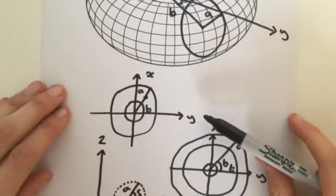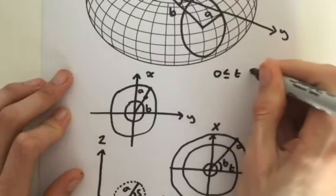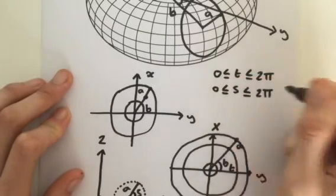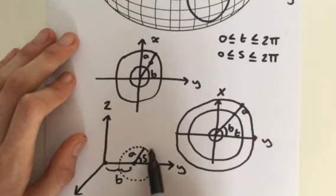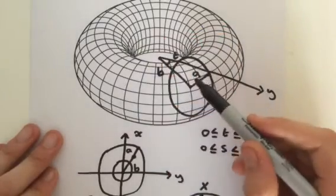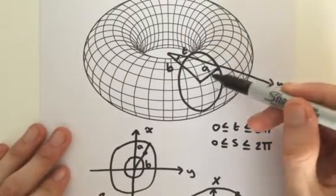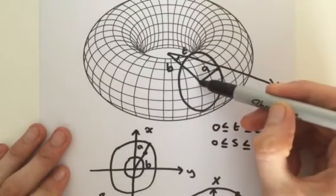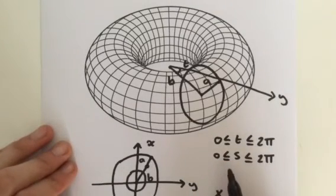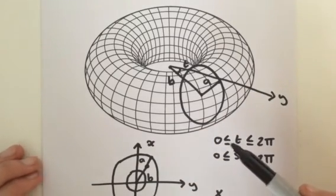Before we go into the next video looking at our vector-valued functions for our torus, we need constraints: t goes from 0 to 2pi, and s also goes from 0 to 2pi, because they both involve circles. We sweep out a circle by varying the angle s, then sweep the circle all the way around 2pi radians by varying t. To clarify: a is the radius of the circle, and b is the radius from the centre to the centre of that circle. In the next video we'll use these diagrams and the two inequalities to define a vector-valued function for our torus, and then calculate the surface integral.